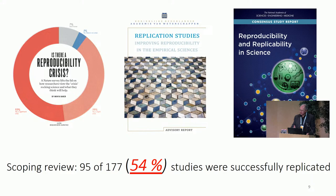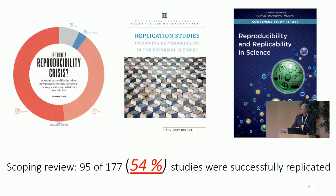Later on we did some surveys and studies; royal societies in the Netherlands and the Academy of Sciences in the USA did learned reports on them. By the way, all my slides will be available through the website of this conference, with many references to reports, YouTube, TED talks, and articles below the slides. Recently, a systematic review appeared — 177 replication collections summarized together — and across the board, only 54% were replicable. It's not good enough.